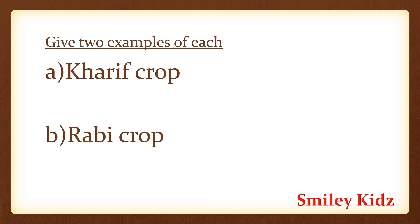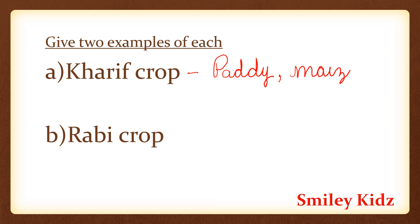Moving ahead to the next bit — give two examples of each. Examples of Kharif crops are paddy and maize. Examples of Rabi crops are wheat and gram.